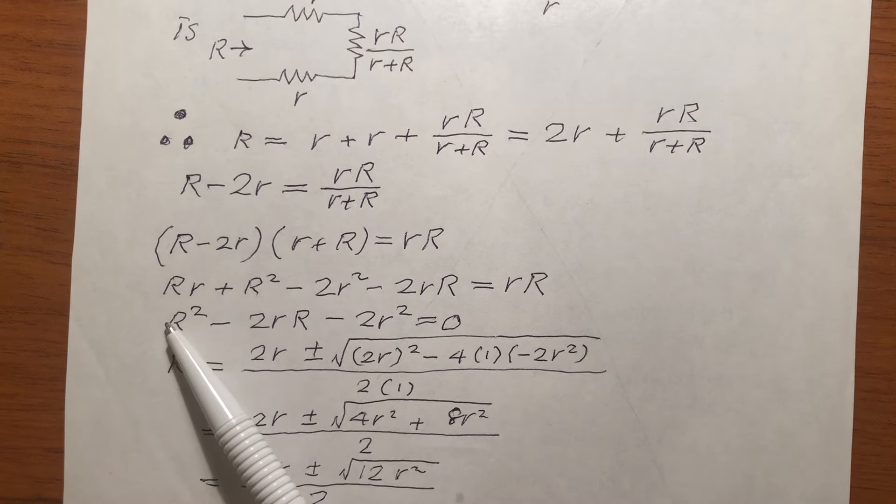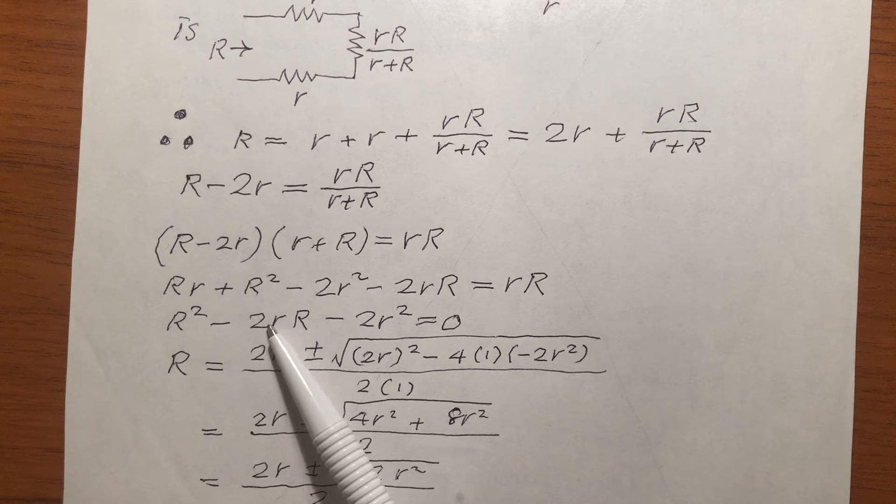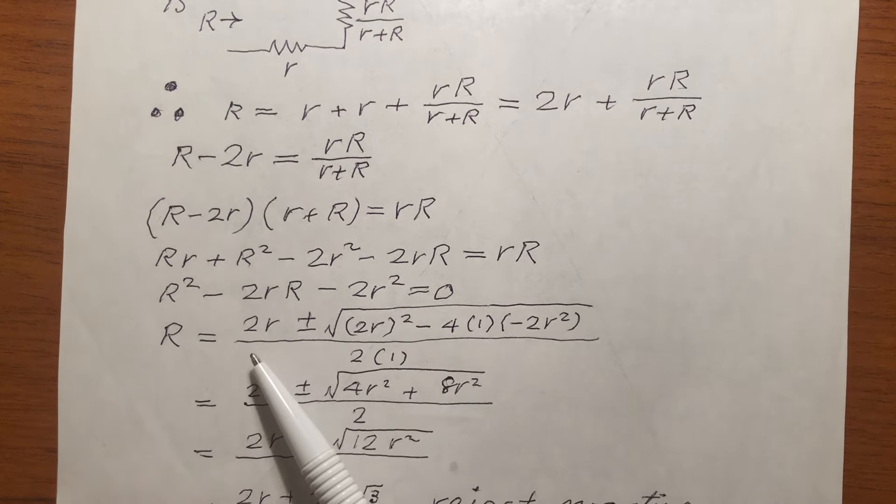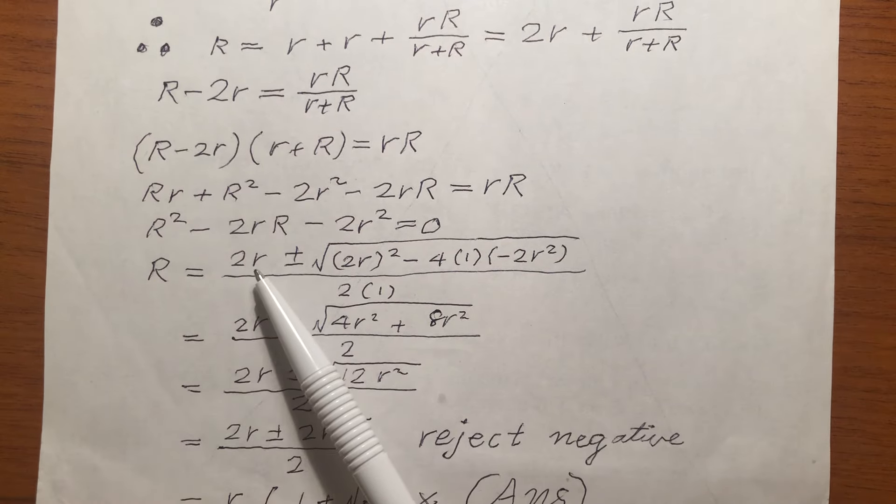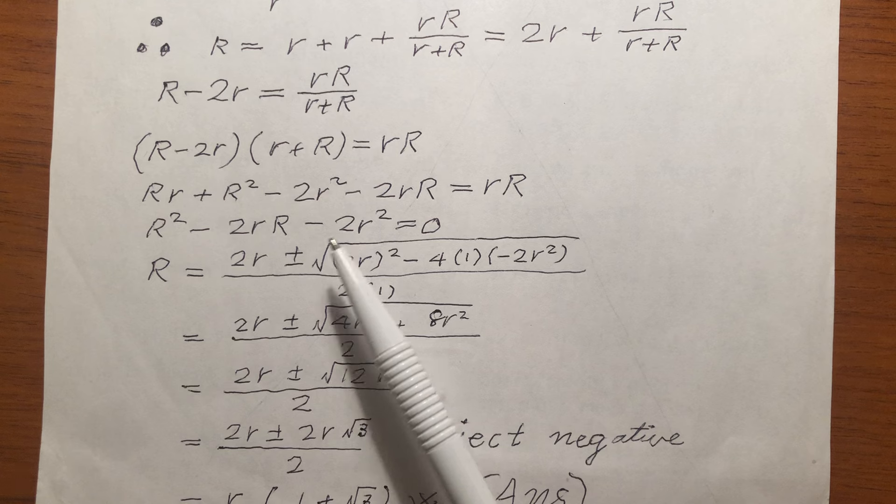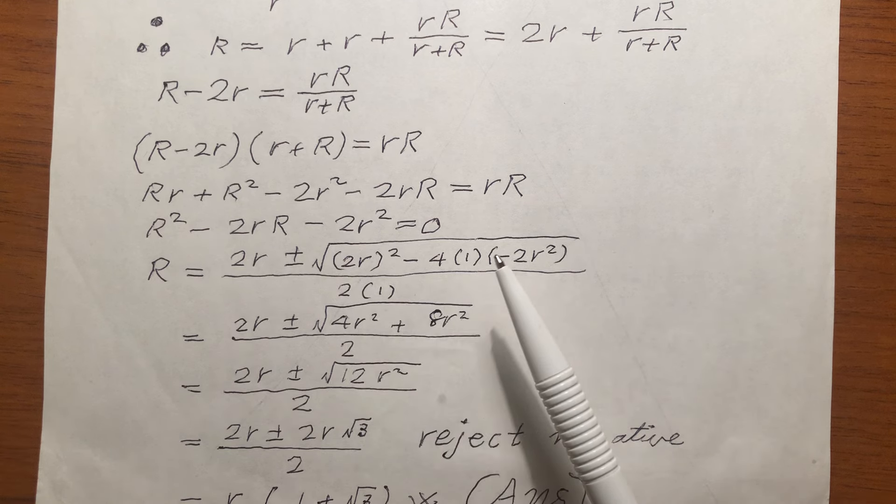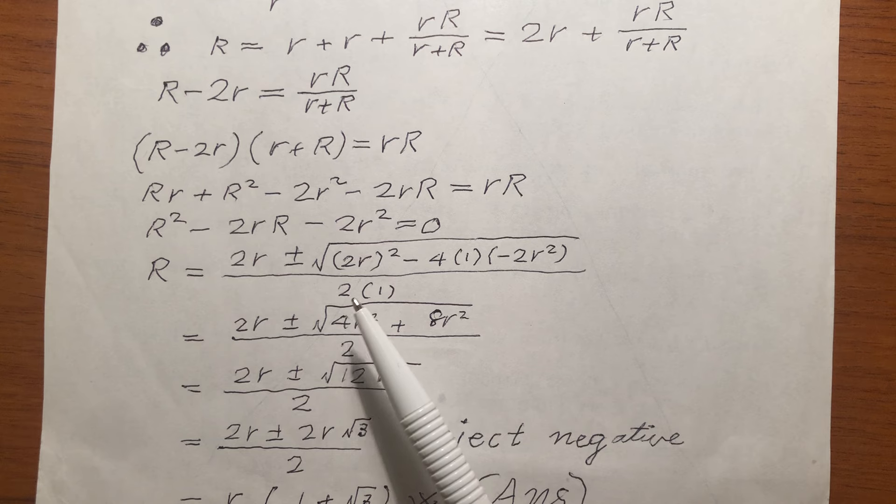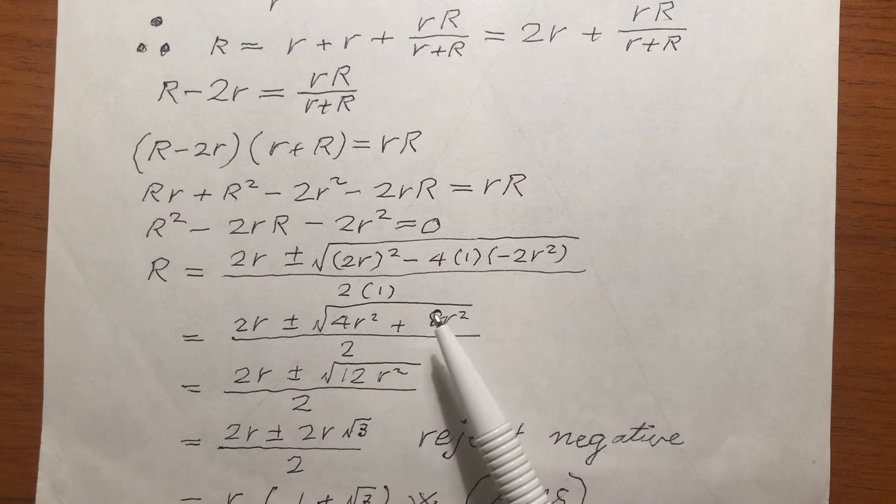So I have A, which is 1, I have B, which is negative 2r, I have C, which is negative 2r squared, so I use a formula, quadratic formula. So, minus B plus minus square root B squared minus 4AC, divided by 2A. Simplify the inside of the square root, I get this. Simplify further, I get this.